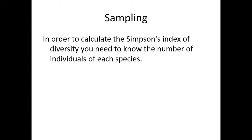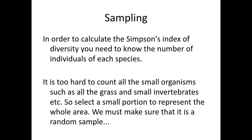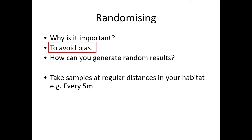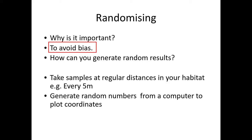So, sampling — we need to sample in order to look at the diversity of species within a habitat. It's often quite difficult to count all the small organisms present within a habitat, so we select a small portion to represent the whole area. We need to make sure that this sample is random to avoid bias, and we can generate random results either by using transect lines every 2, 3, or 5 metres, or by using a random number generator on a computer to plot coordinates using transect lines as a grid.